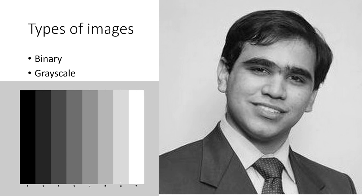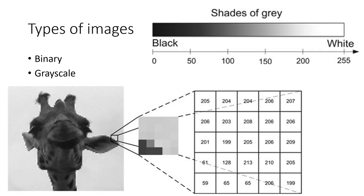The second type of image is grayscale. A grayscale image is simply one in which the only colors are shades of gray. Grayscale images take all the values between black and white, where black is generally zero and white is 255.